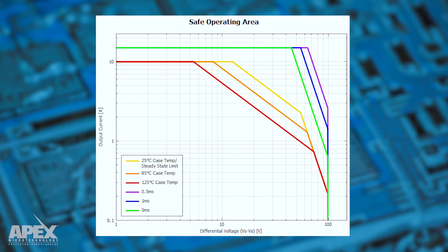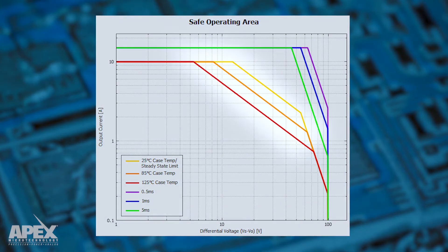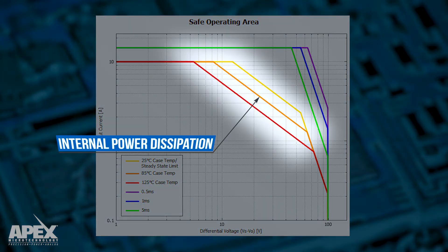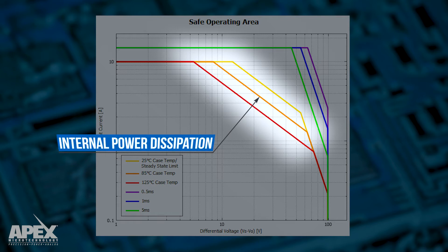The second limitation is the total power handling capability, or the maximum power that the amplifier can dissipate internally. It is important to note that the product of the output current on the vertical axis and the voltage stress on the horizontal axis is constant over this line.